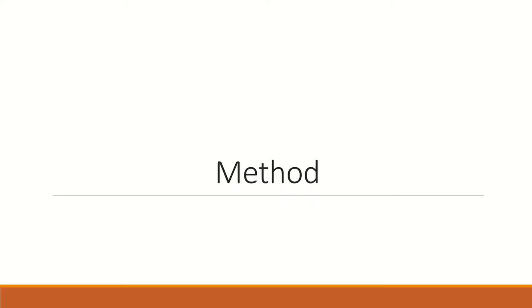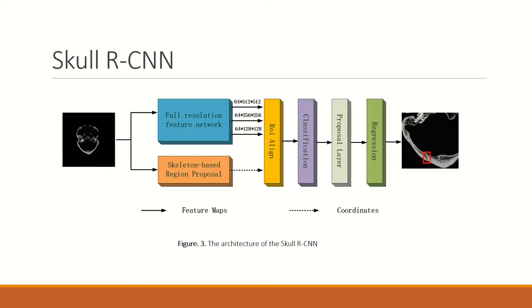So, based on Faster RCNN, we propose ScalRCNN. Different from the previous approach, the learning-based region proposal network is replaced by a skeleton-based region proposal method, and the full-resolution feature network is put forward as the backbone. Next, we will introduce these two methods in detail.